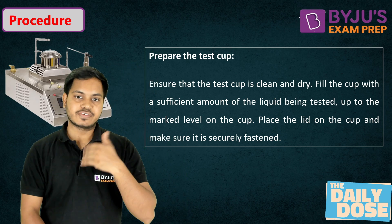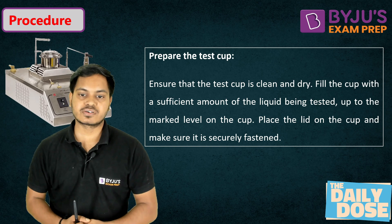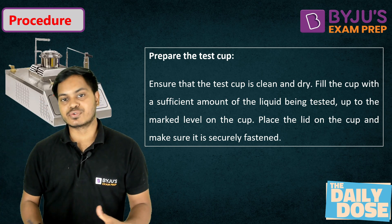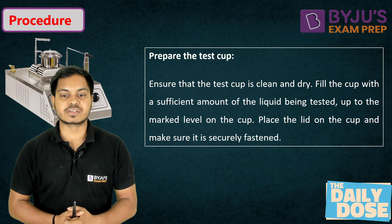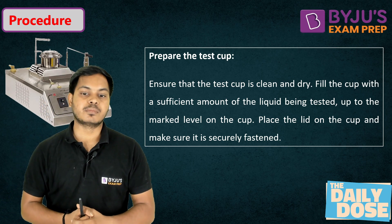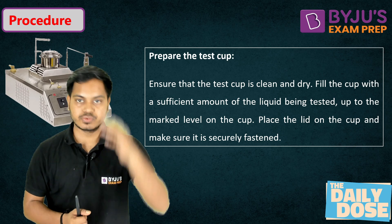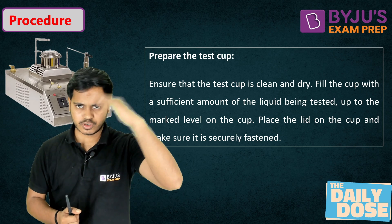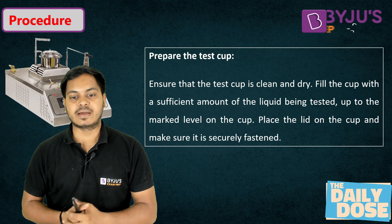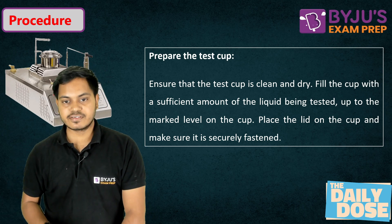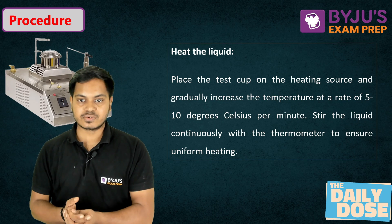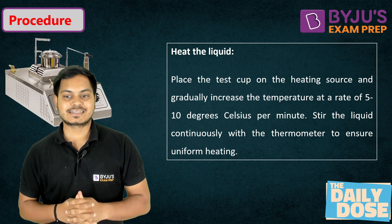Moving on to the procedure: first, ensure the test cup is clean and dry. Then fill the cup with a sufficient amount of the liquid being tested, up to the marked level — which is 9 mm from the top surface. Place the lid on the cup and make sure it is securely fastened. Then place the test cup on the heating source — here we are using a heat plate.